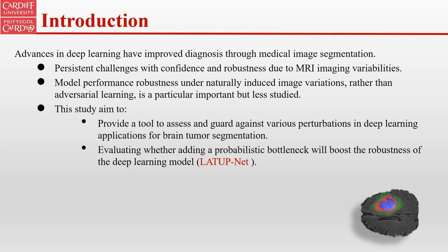This study aims to: one, develop and provide a tool to assist and protect against various perturbations in deep learning applications for brain tumor segmentation; and two, evaluate whether adding a robust bottleneck will enhance the model robustness against those perturbations.